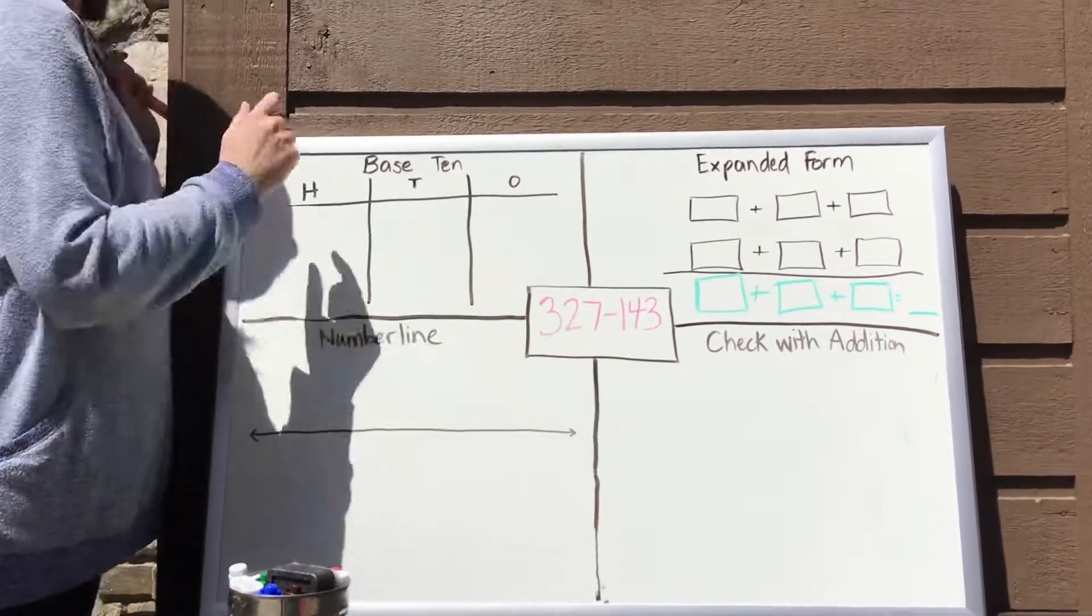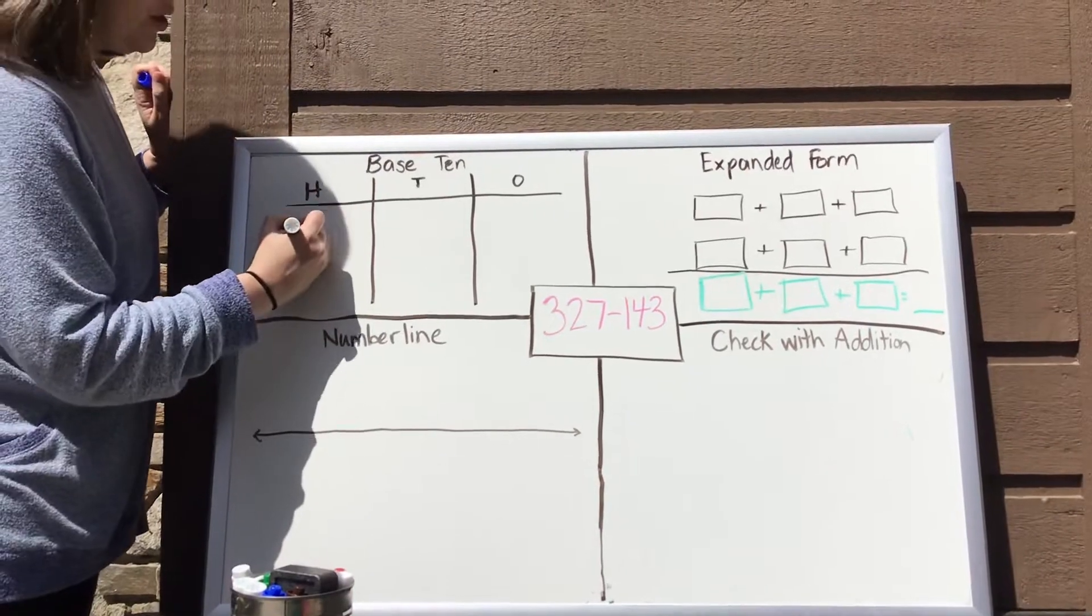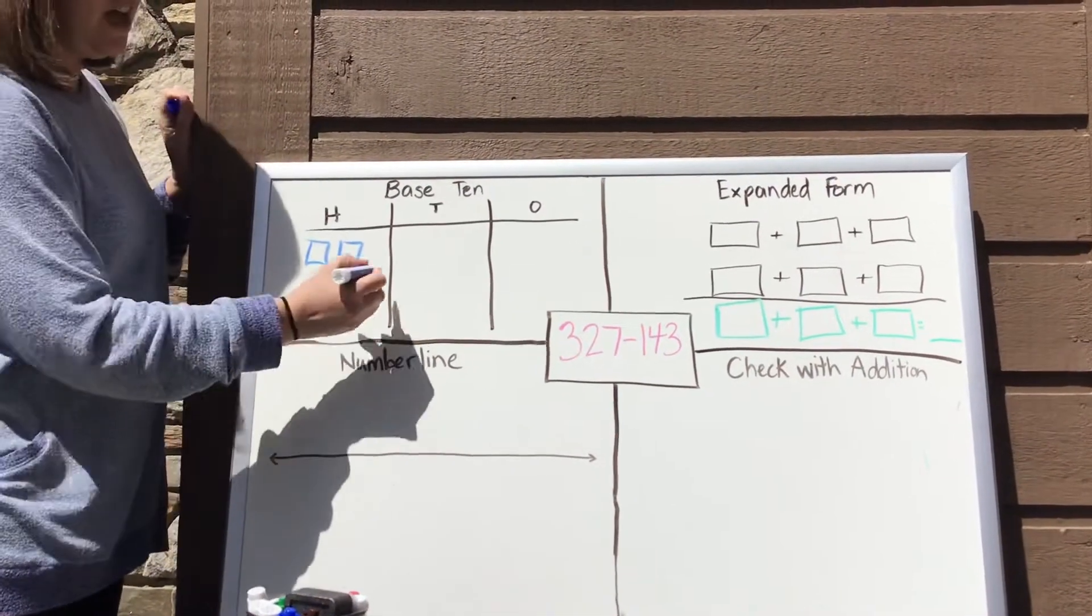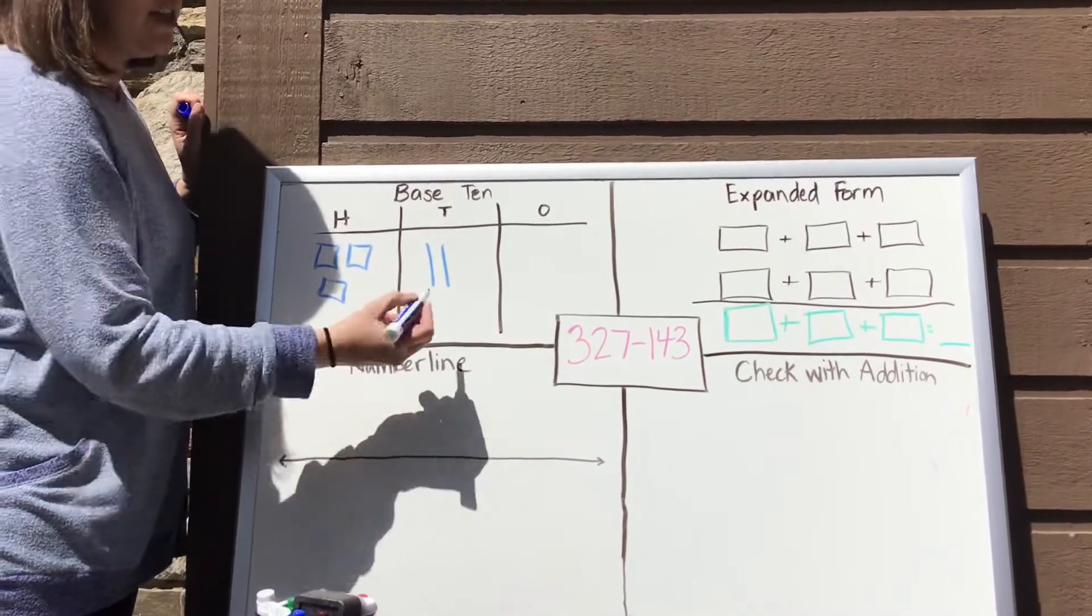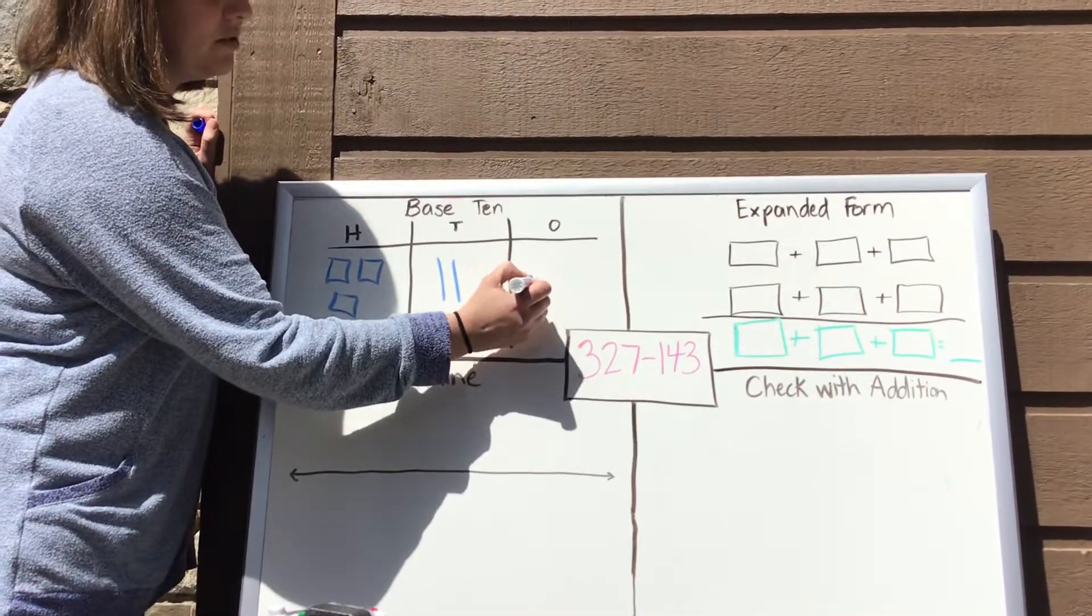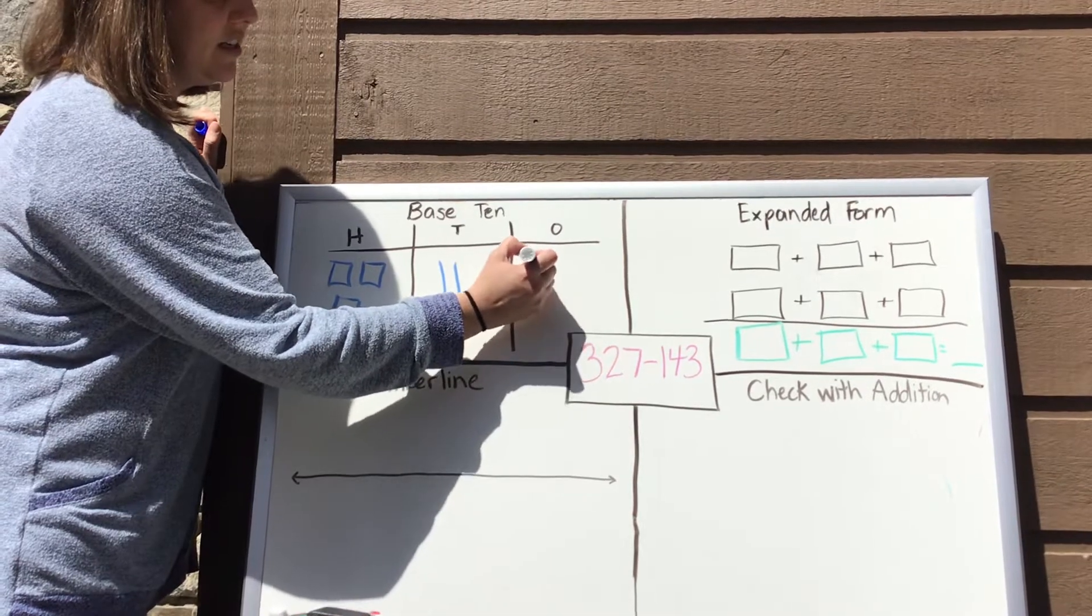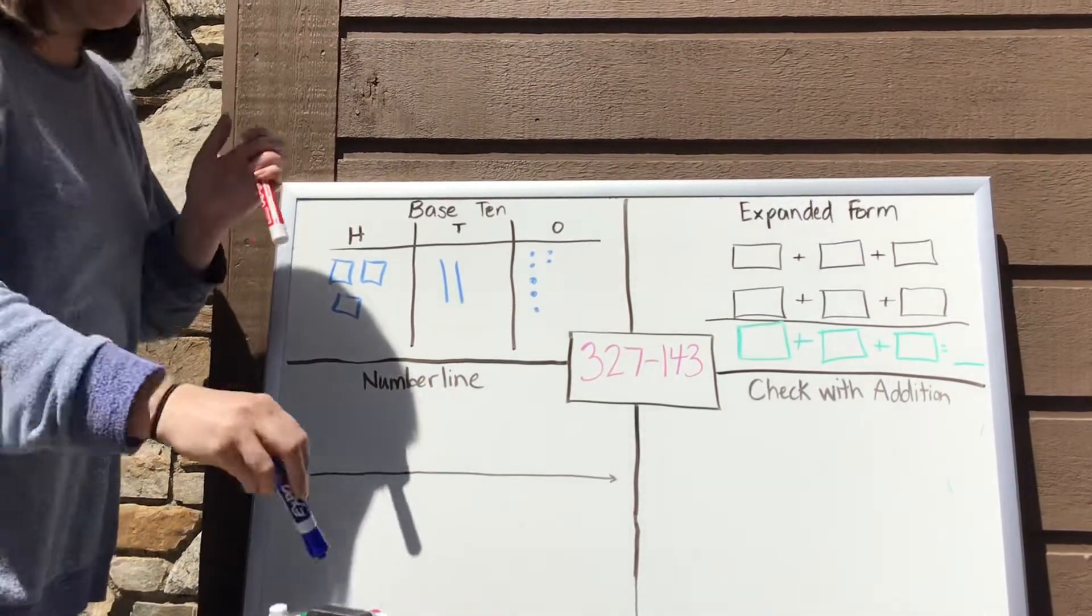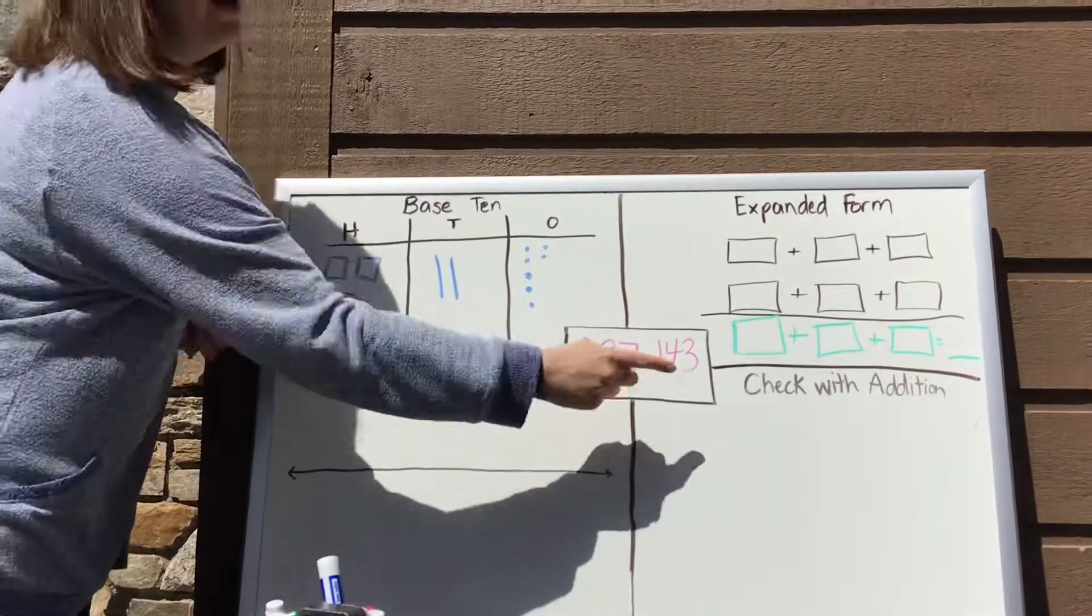And then we're going to take this amount of blocks away. So we're going to start with three hundreds. One, two, three, and two tens, and seven ones. Now I'm going to switch to my red marker so that we can X out 143.